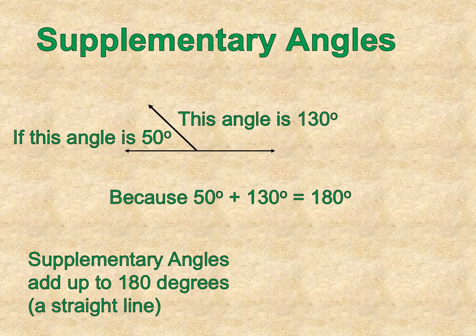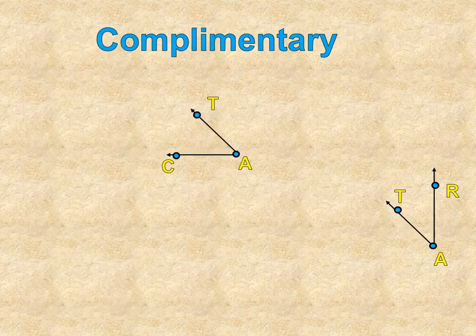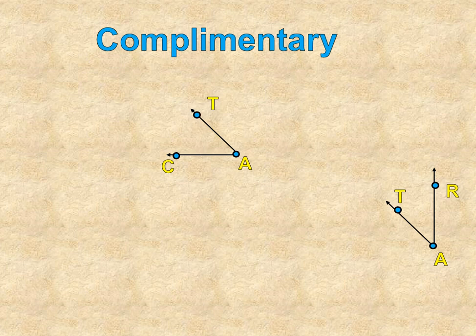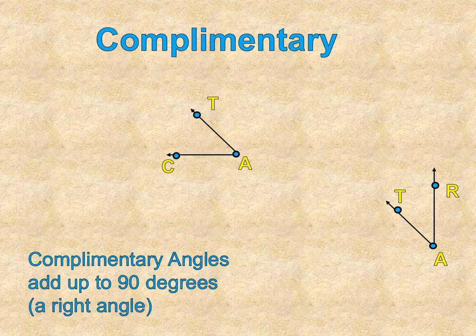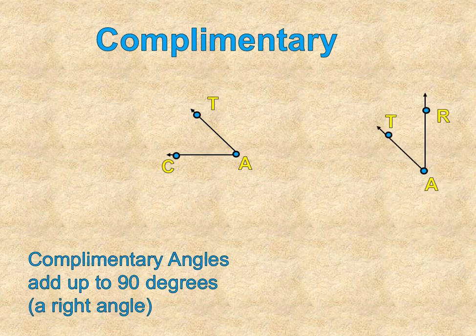That's how supplementary angles are given. So if you're given a straight line, and you're given just one of the angle measurements, you can figure out the other one, because they have to add up to 180 degrees. Complementary angles work the same way. So if I have these two angles, their complementary angles add up to 90 degrees. So instead of adding up to a straight line, these ones will add up to a right angle.